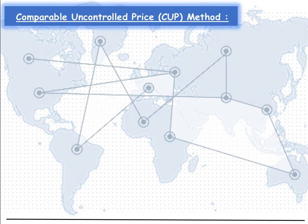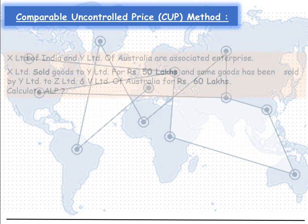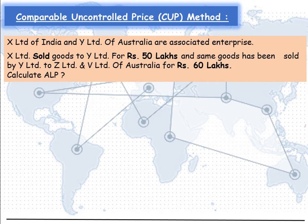First we'll see the Comparable Uncontrolled Price method, which is also known as the CUP method. X Limited of India and Y Limited of Australia are associated enterprises. X Limited sold goods to Y Limited for Rs 50 lakhs, and the same goods were sold by Y Limited to Z Limited and V Limited of Australia for Rs 60 lakhs.